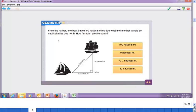From the harbor, one boat travels 15 nautical miles due west, another travels 15 nautical miles due north. How far apart are the boats? How can you find that?